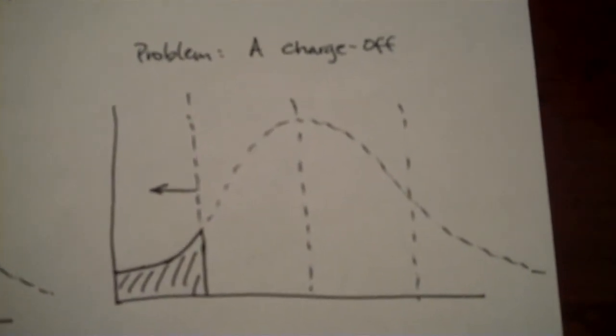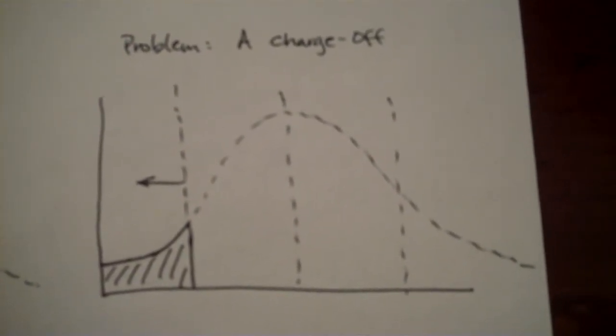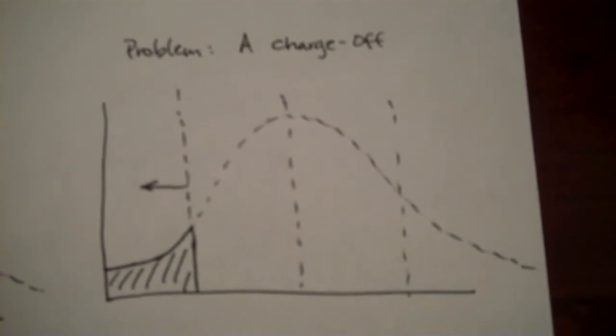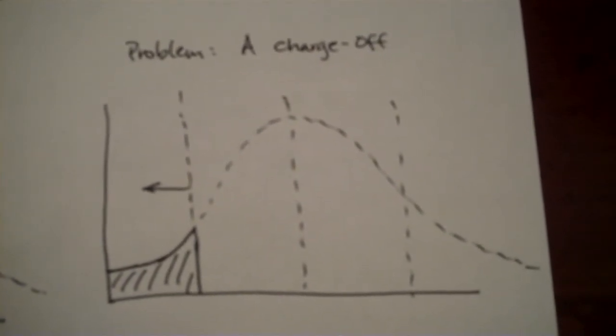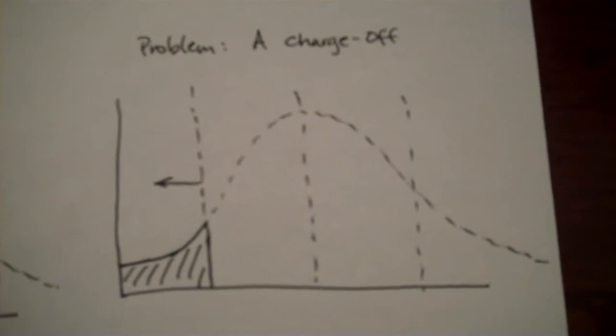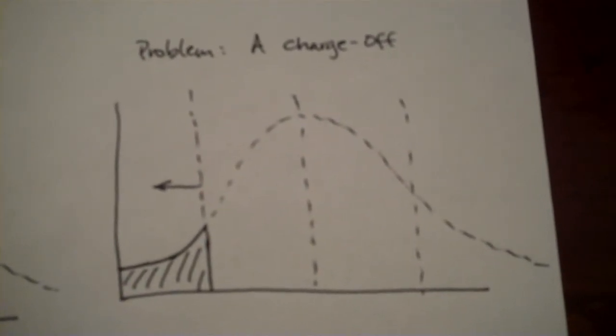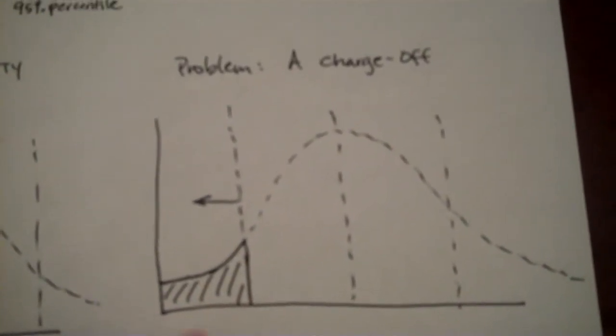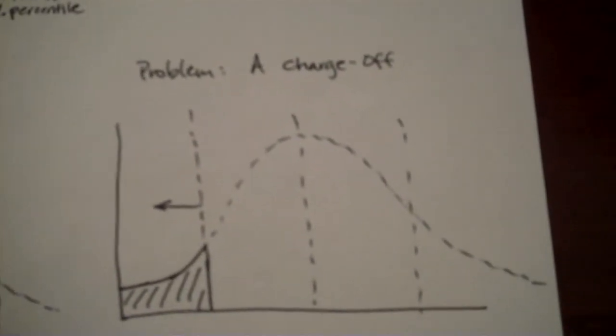This is another problem, a charge-off. A charge-off is defined as credit code 9. 9 is a charge-off. A charge-off is where a bank feels like they no longer have a chance at collecting the money that you owe them. So that is where you are in a horrible, horrible credit situation.